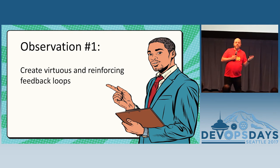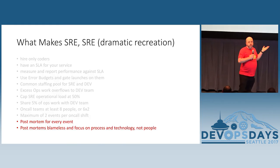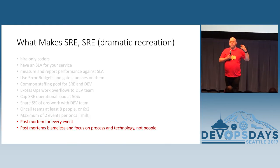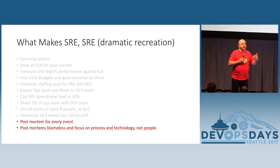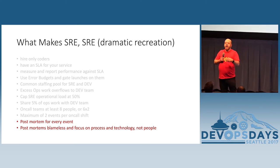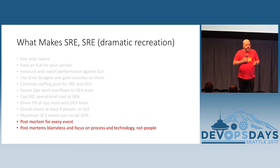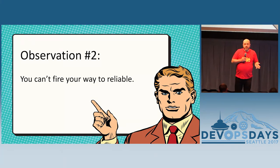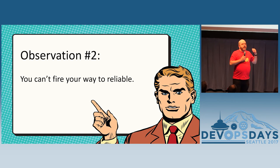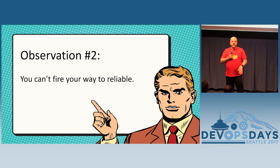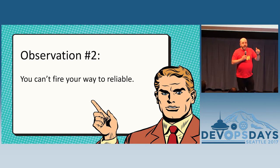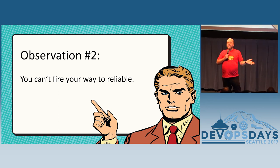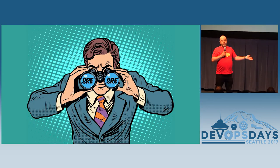Another example of a feedback loop that shows up in DevOps is the notion of blameless postmortems — postmortems focused on process and technology and how they failed, but specifically not on how some person failed. Here's a key insight: it is not possible to fire your way to reliable. You can't say if I only fire the person who made that mistake and keep doing it again and again, I'll have a fully reliable system. You don't — you just have one person crouching in the corner shivering.